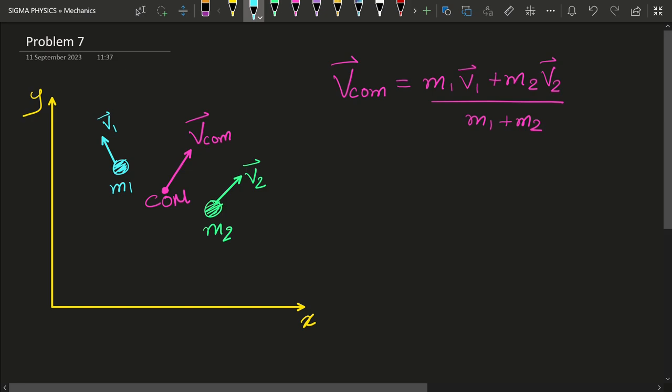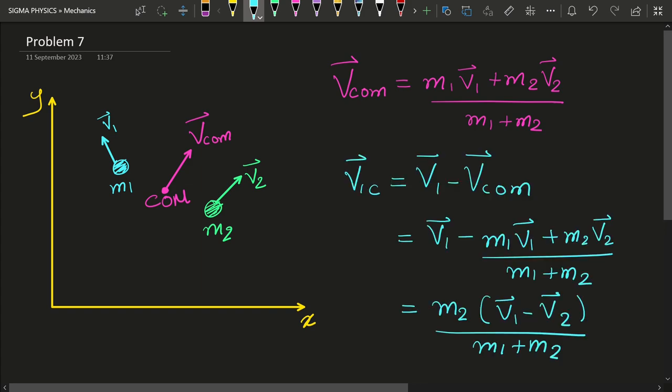We are going to get the velocity of m1 with respect to the center of mass. Call the expression for velocity of center of mass equation number one, and the expression for velocity of m1 with respect to the center of mass equation number two. Similarly, we can find the velocity of m2 with respect to center of mass and call it equation number three.